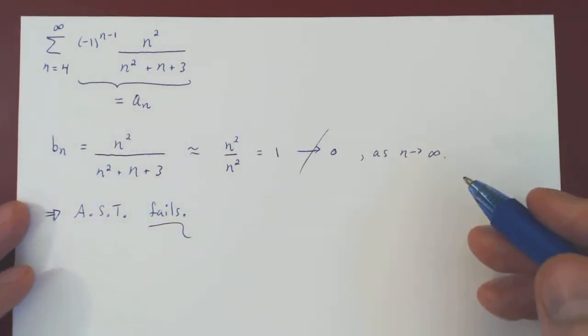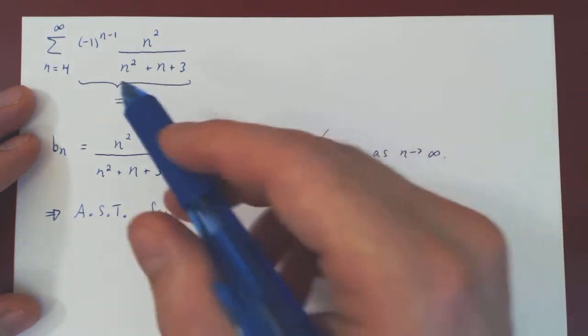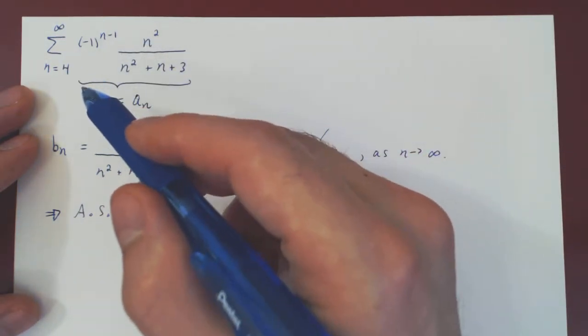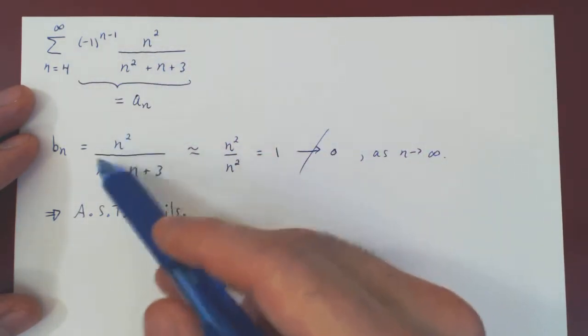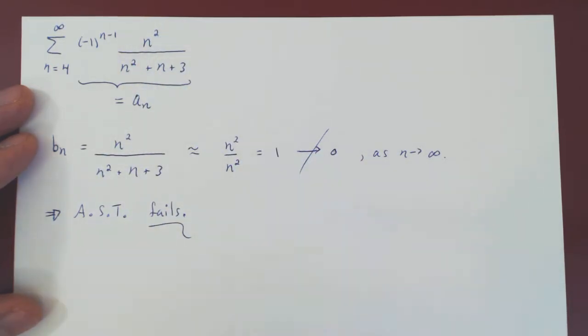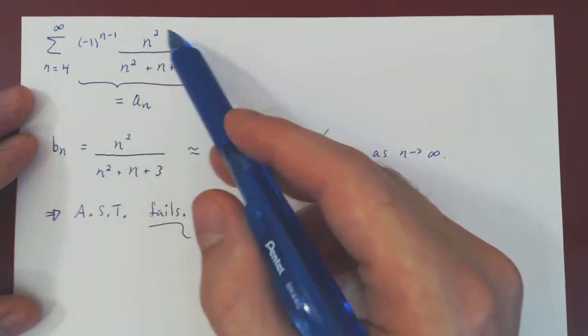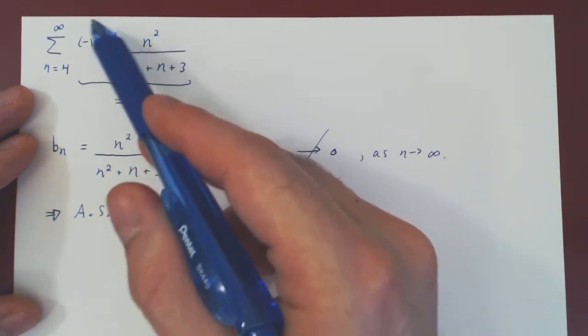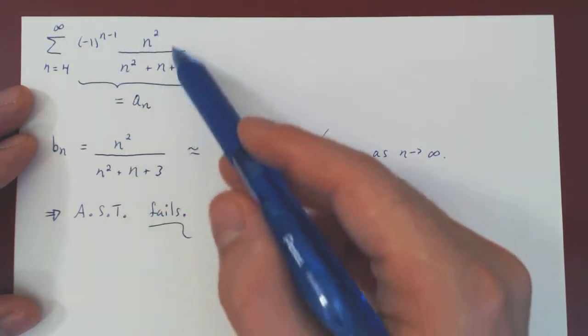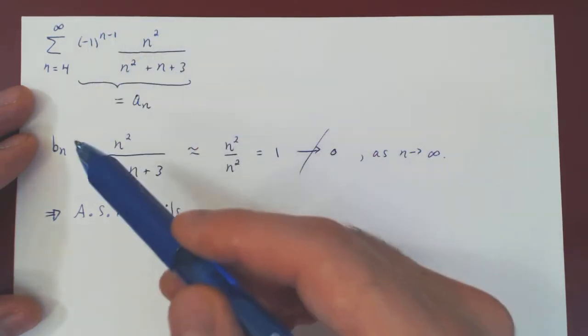But if we use our intuition, it should not be very hard to show that the series diverges by the divergence test. Using our intuition, bn will approach one in the limit, and so if this part approaches one, and this is plus or minus one always, then this clearly cannot shrink to zero. It will oscillate between positive and negative one forever.